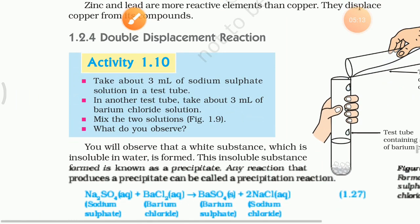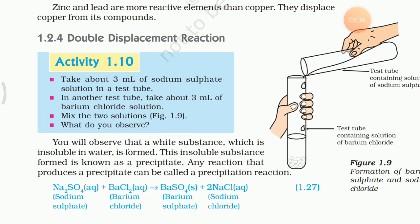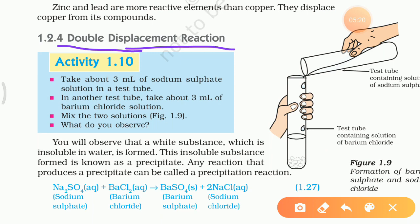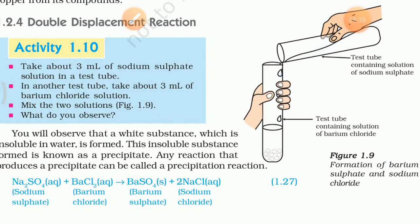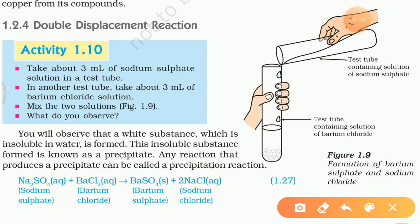Now we will discuss double displacement reaction. As the name indicates, double means two. Two different atoms, or groups of atoms, or ions are exchanged in this type of reaction. That's why the name is double displacement reaction — it means two times displacement. So two different atoms or two different groups of atoms are exchanged in double displacement reaction. For this, we will do an activity.